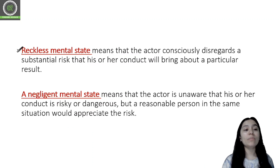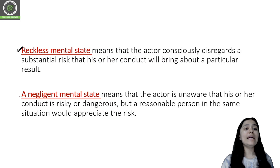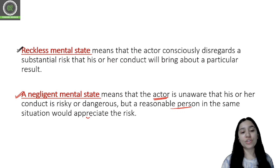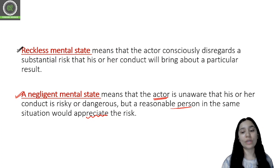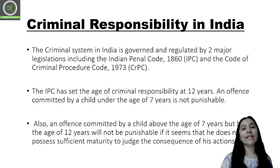Then we have a reckless mental state — here we also understand our act; we know that this type of activity can injure someone or cost someone their life, but we are so reckless that we do it anyway. Then we have a negligent mental state, where the actor is unaware that his or her conduct is risky and dangerous, but a reasonable person in the same situation would appreciate the risk — these people neglect serious situations. So these are the four important elements related to the guilty mind.